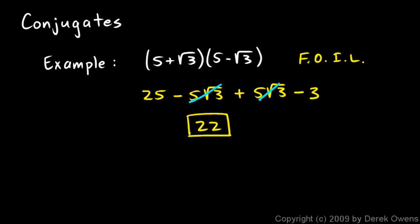And the term here — conjugates — refers to two expressions in this form: 5 plus the square root of 3 and 5 minus the square root of 3.